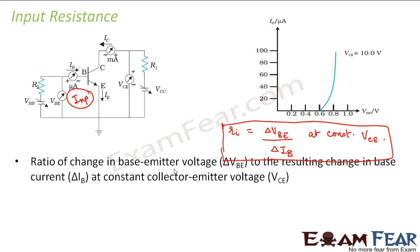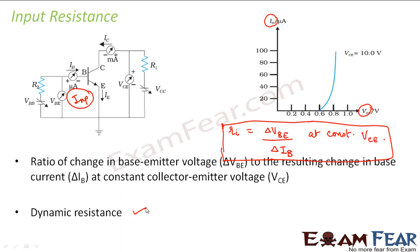Input resistance is the ratio of change in base-emitter voltage to the resulting change in base current at constant collector-emitter voltage. Since the curve is not a straight line, resistance changes at every point, making it a dynamic resistance. That is why we define it as the change in base-emitter voltage divided by the change in base current.